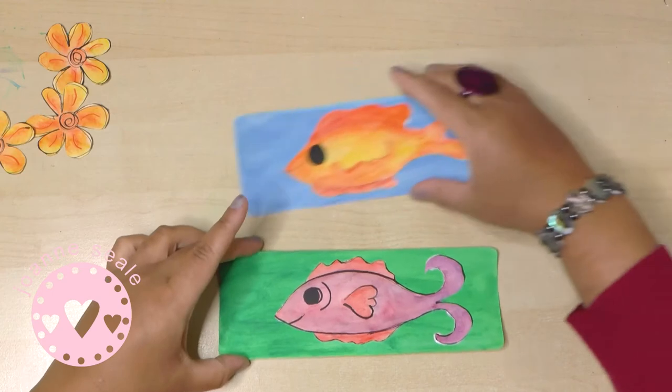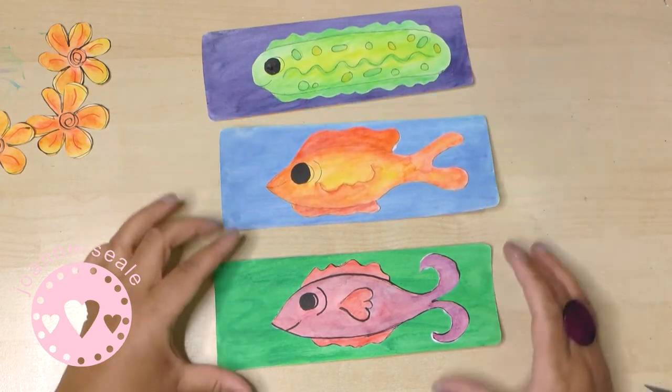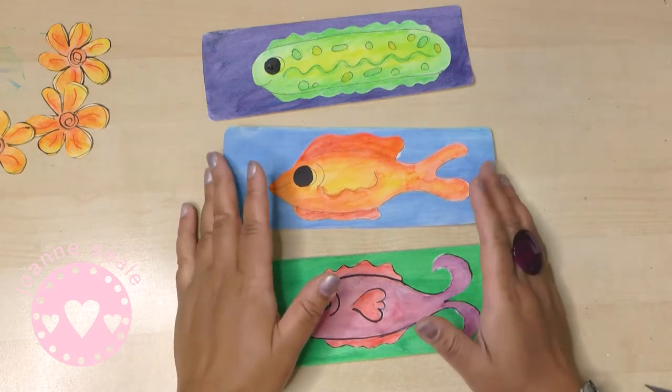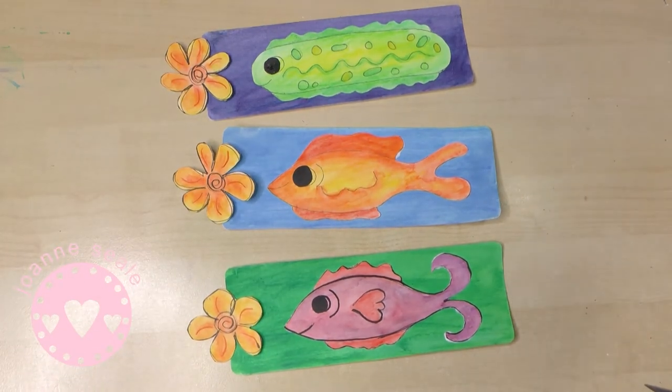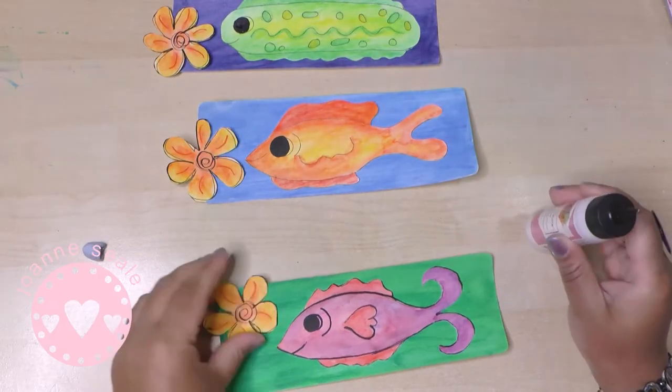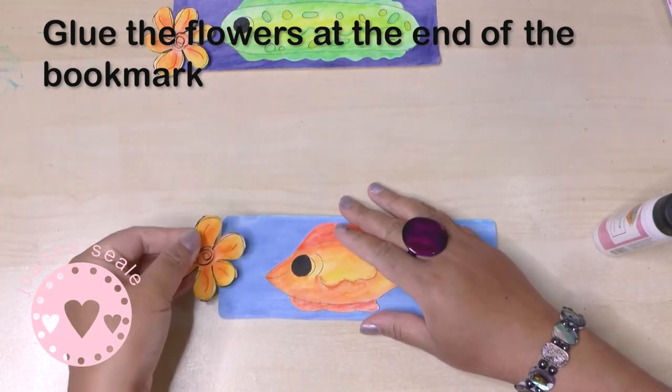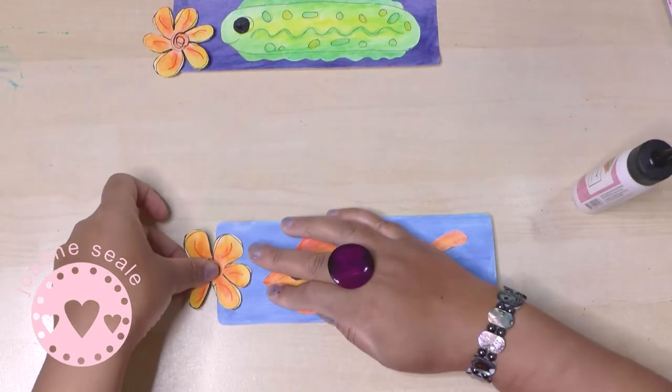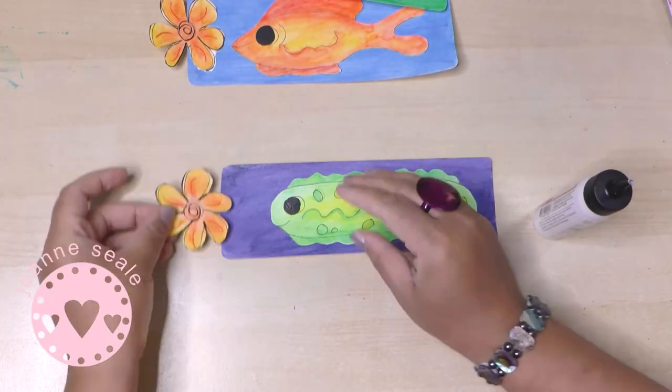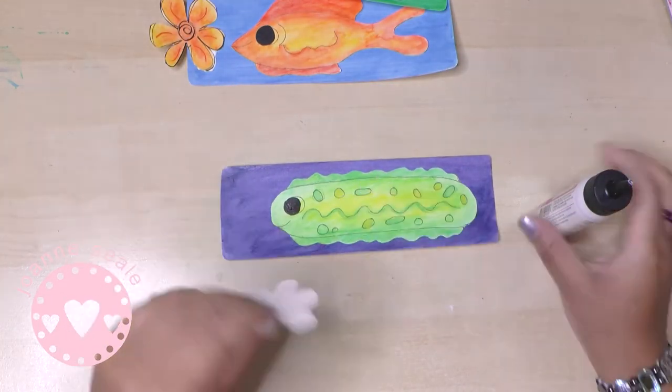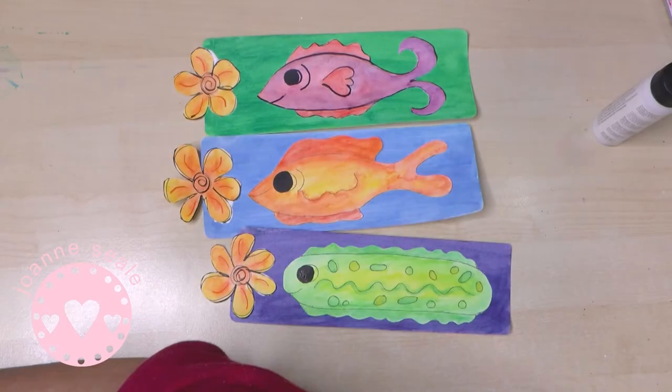So now I'm going to add the flowers. These will be glued half on the bookmark and half off so there's a little piece of the flower peeping out at the top, so it's like a little handle. So I just put glue on half of the flower and press that down. Just finding the right way around.